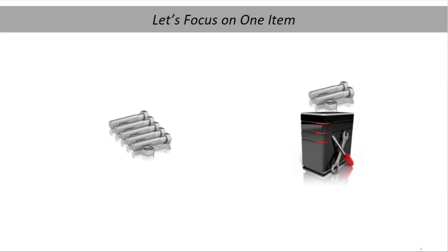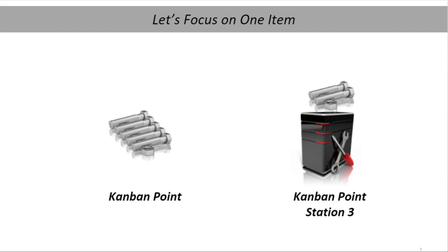This is an example of the most basic Kanban method possible: the replenishment of a small item stocked at a station. Here's a close-up look at a point of use, POU, called Station 3. The item in question is a nut and bolt set, a certain number of which are held in a small bin on the bench. The operator consumes these fasteners as required, and at some point is going to need more. The fastener's location on the line is called a Kanban point.